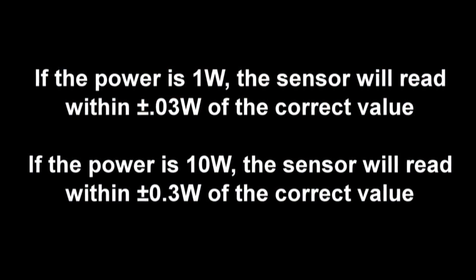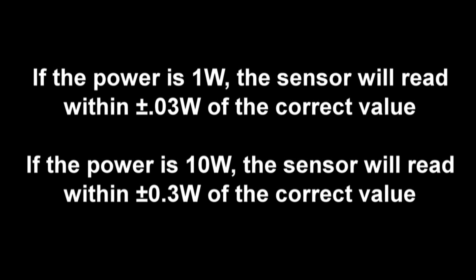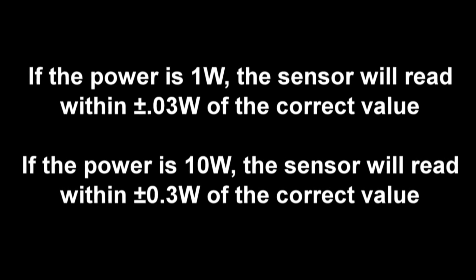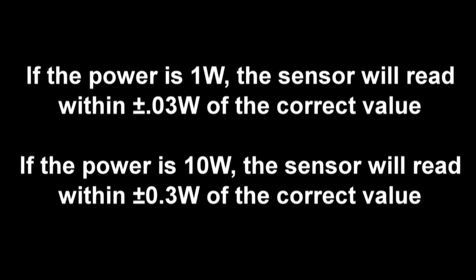This specification means that the sensor will read within plus or minus 3% of the correct value at each power. Thus if the sensor is calibrated with a centered beam at 532 nanometer at 1 watt, the sensor will read within plus or minus 0.03 watts of the correct value. If it's 10 watts, it'll read within plus or minus 0.3 watts.